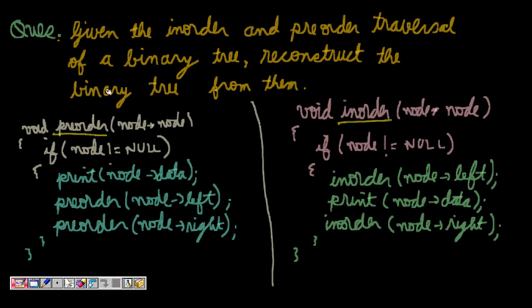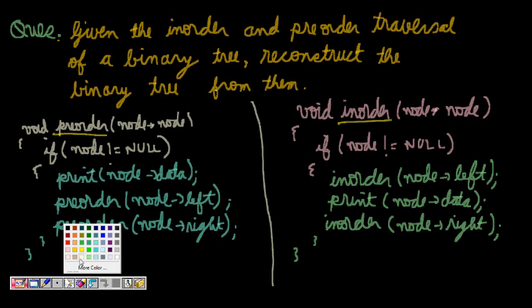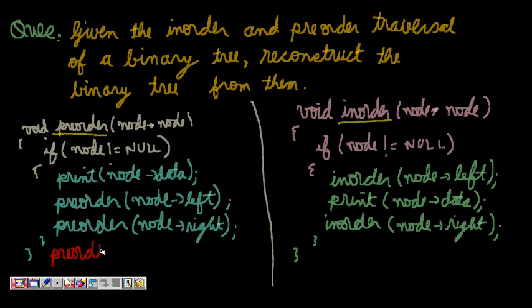Let's look at the code for pre-order. In pre-order, if the node is not null, we print the node and then recursively call pre-order on node left and pre-order on node right. One very important thing we can infer is that pre-order gives us the root, because whenever we pass the root, it will be printed first. So the first element in the pre-order traversal is the root.